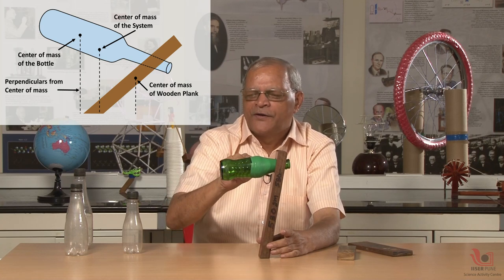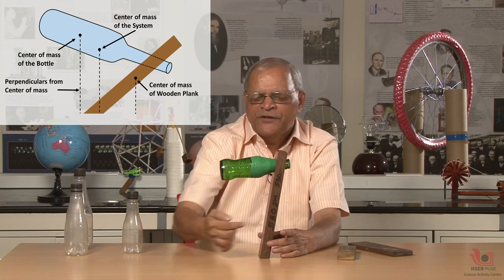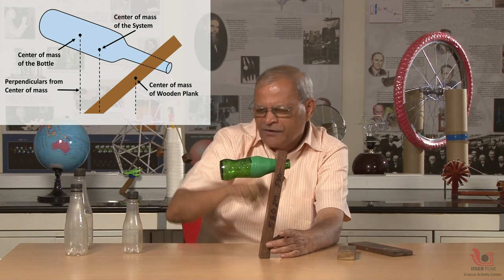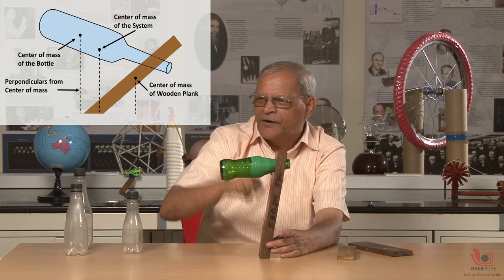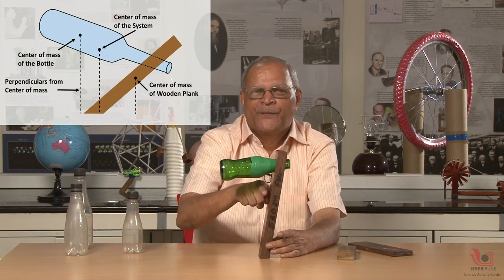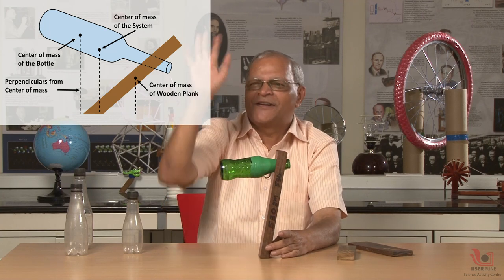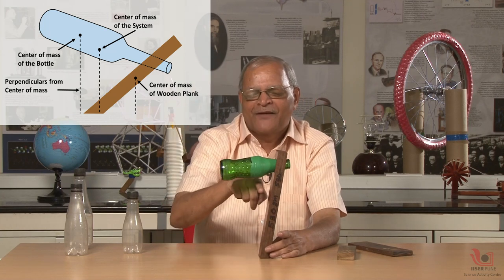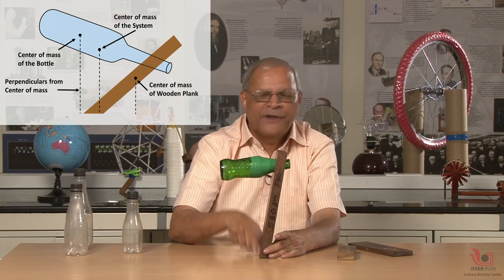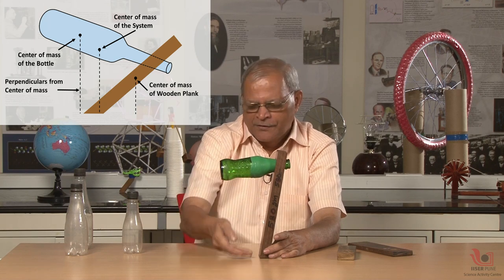It is very simple geometry. Centre of mass of the bottle here, centre of mass of the plank here. You have a line segment joining the two — take the midpoint and that will be the centre of mass of the combined system. And from that, drop the plumb line — it will fall into the base.